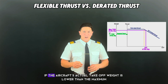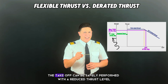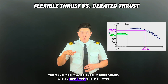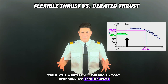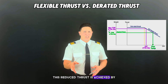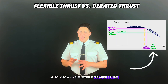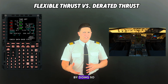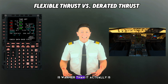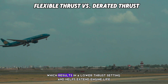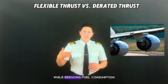However, if the aircraft's actual takeoff weight is lower than the maximum performance-limited takeoff weight, the takeoff can be safely performed with a reduced thrust level while still meeting all regulatory performance requirements. This reduced thrust is achieved by inputting a higher assumed temperature — also known as the flexible temperature — into the engine's control system. By doing so, the engine is tricked into thinking that the outside air temperature is warmer than it actually is, which results in a lower thrust setting and helps extend engine life while reducing fuel consumption.